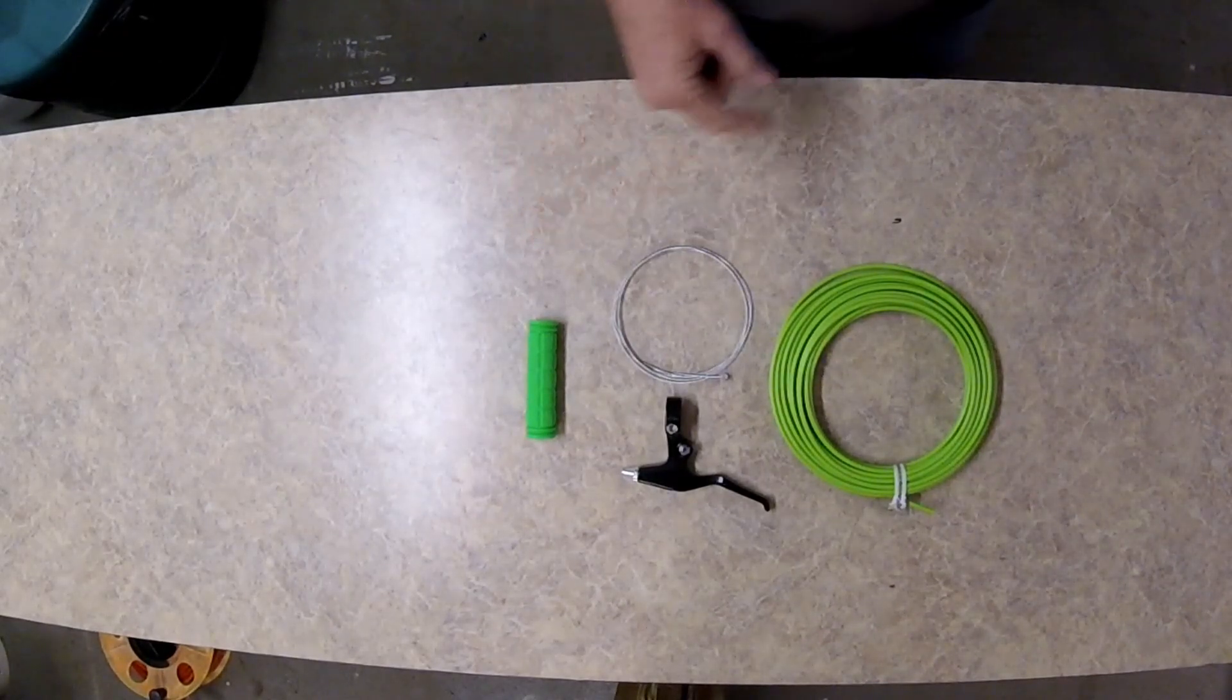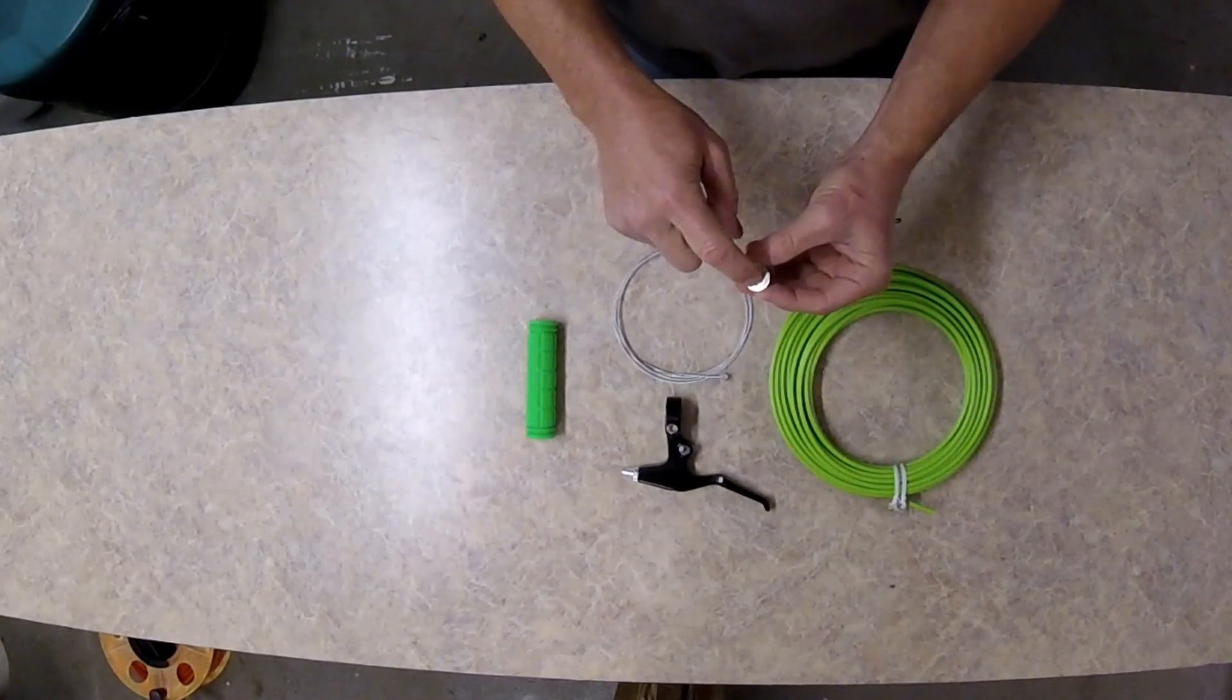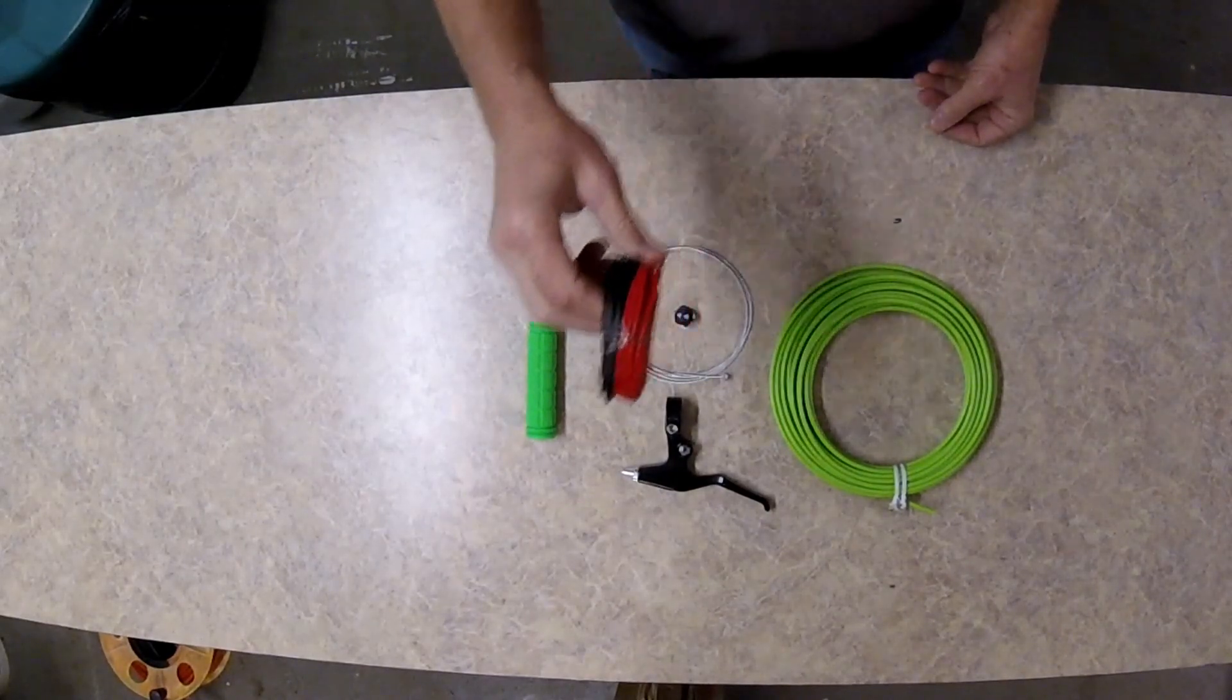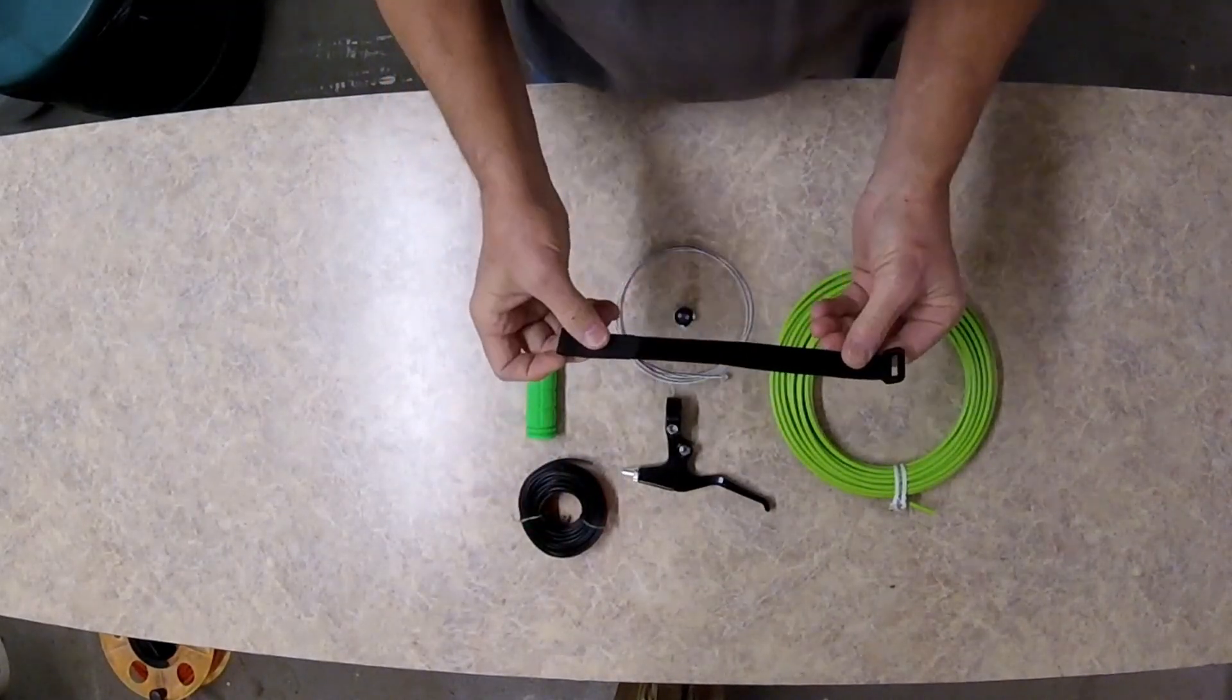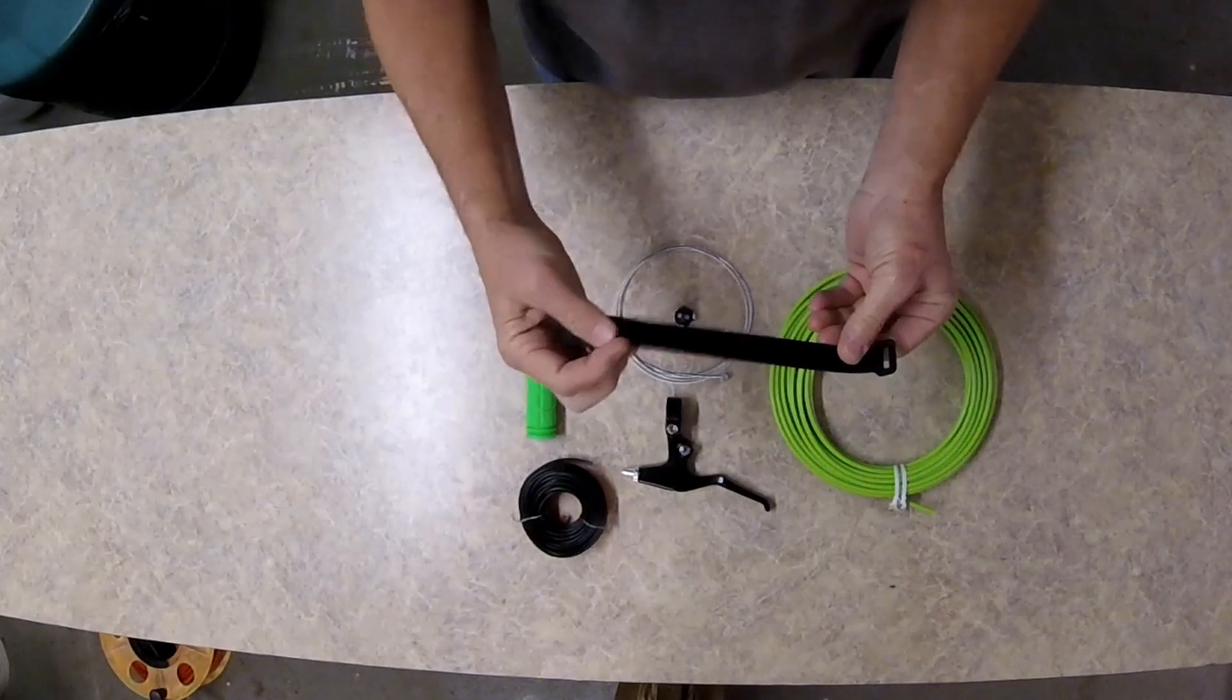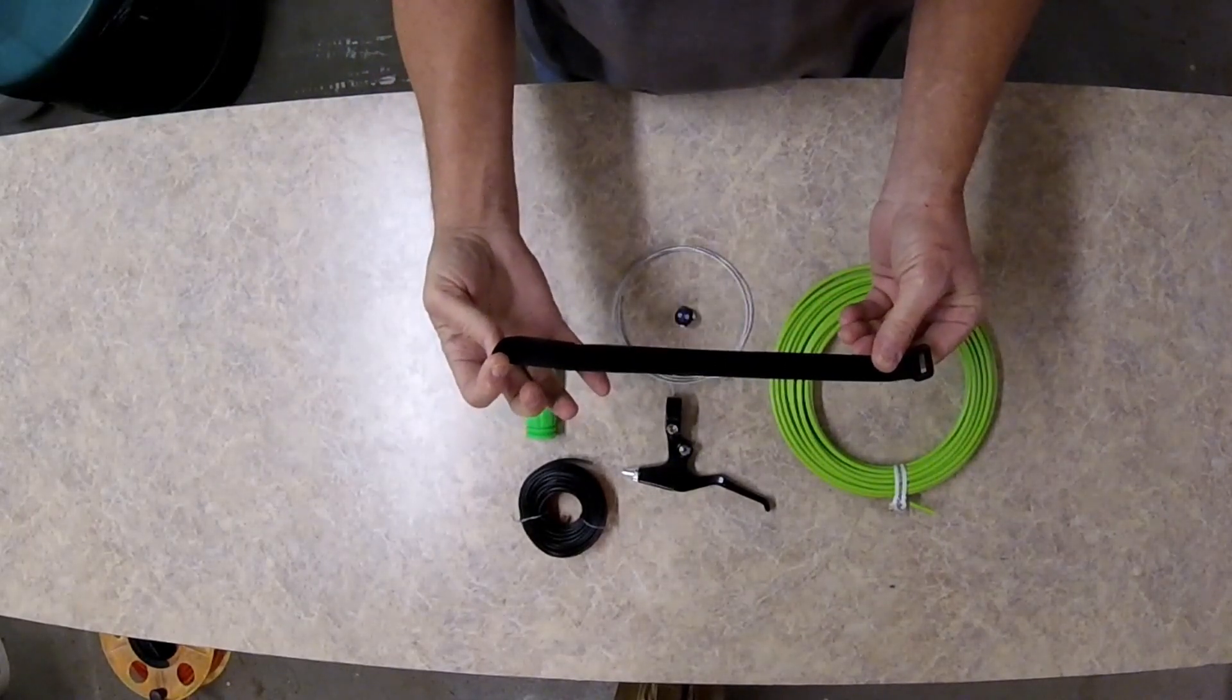We're going to need a momentary kill switch, wire for the kill switch, and a strap for our hands - 12 to 14 inches should be good.